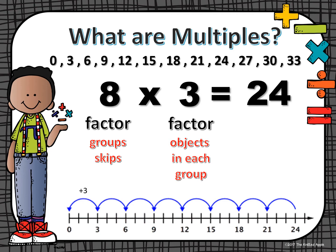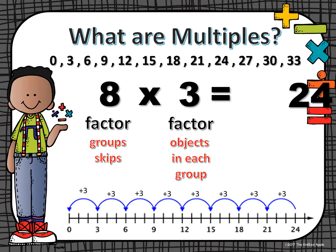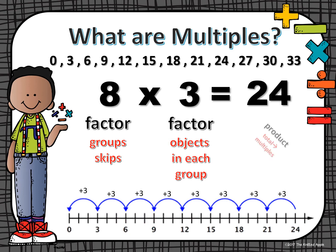So for example, on our number line, we have a group of 3 — we're adding 3 each time. Another group of 3 gives us 6, another group of 3 gives us 9, another group of 3 is 12. At 5 groups of 3 we have 15, 6 groups of 3 is 18, 7 groups of 3 is 21, and 8 groups of 3 — or 8 skips on the number line — gives us 24. So 24 is our product, and we consider that our total. Once we get to that final count, that's going to be our multiple of 3, which is 24.